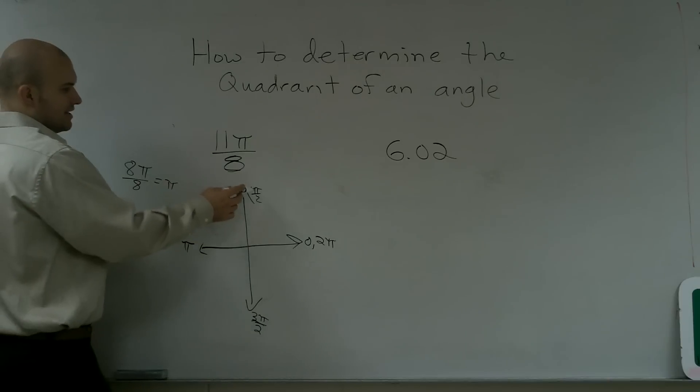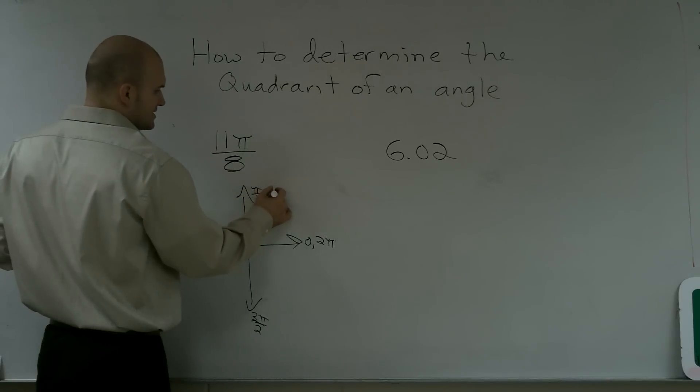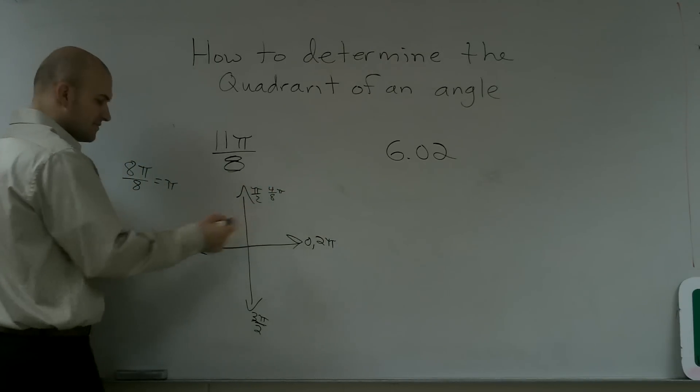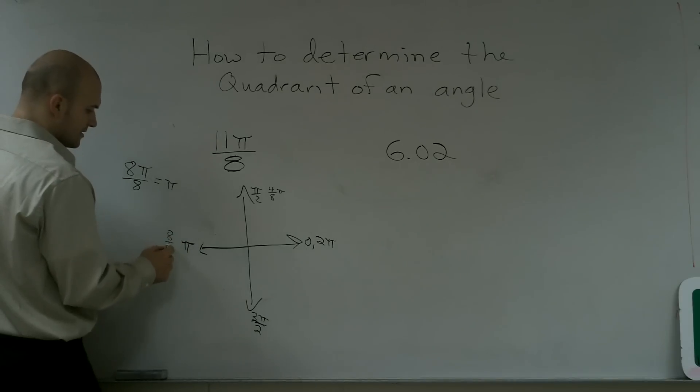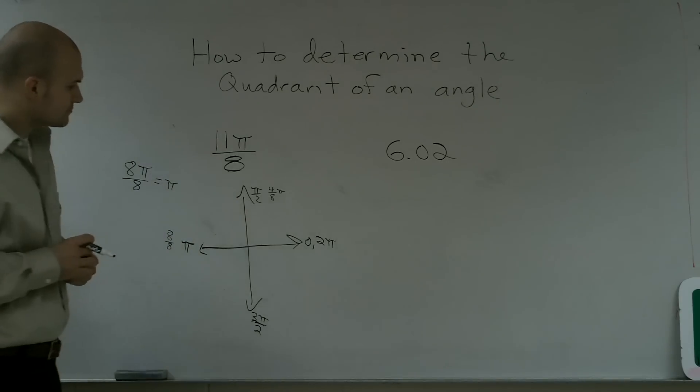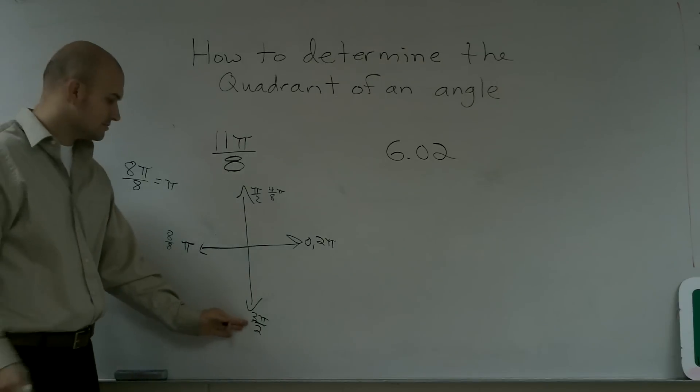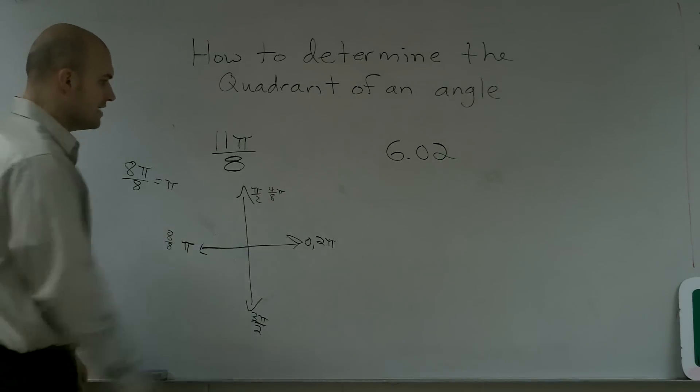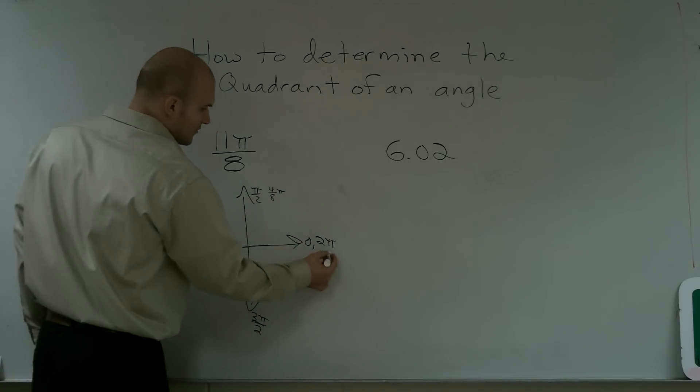So if you look at it right here, this would essentially be the same thing as 4π over 8 because 4/8 is 1/2. And this is essentially 8 over 8. This would be 12 over 8, which is 3/2. And then this one would be 16 over 8.